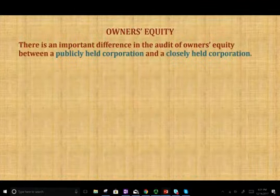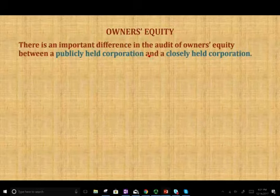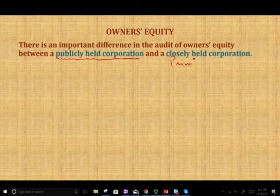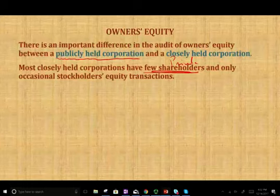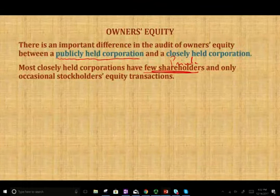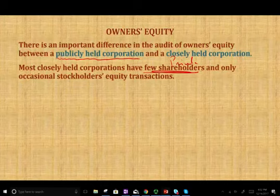The first thing we want to differentiate is an important difference in the audit of owner's equity between publicly held companies and closely held or private companies. Most private companies or small companies have few shareholders, so they have fewer shareholders, and only occasional stockholders' equity transactions. There's not a lot of transactions in the equity section, especially in common stock.